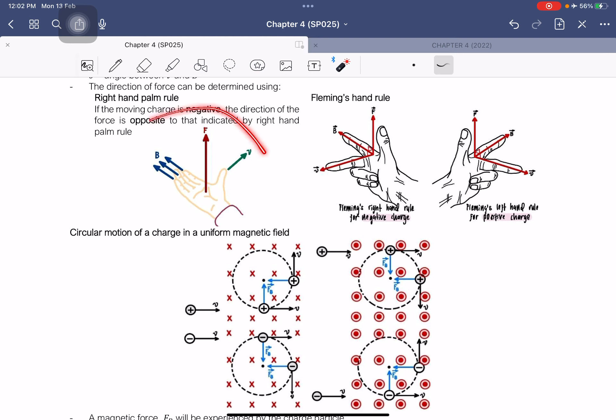The thumb will be pointing the direction of velocity. The palm is the force. The rest of the fingers are for the magnetic field. For Fleming's hand rule, the thumb is telling us the force, the pointing finger is the magnetic field, whereas the middle finger is telling us the direction of velocity.